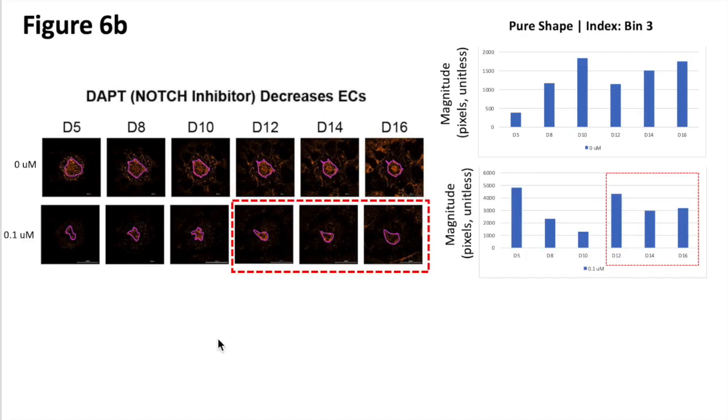If you look at the 0.1 micromolar treatment group, you see, again, a very distinct threshold. Then the first three time points, this index decreases. But once the organoid adopts its preferred shape motif, there's a steep change in this index. And then that index begins to be refined as the time points continue.